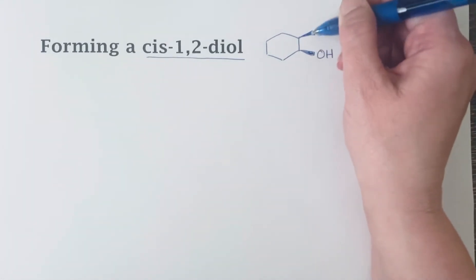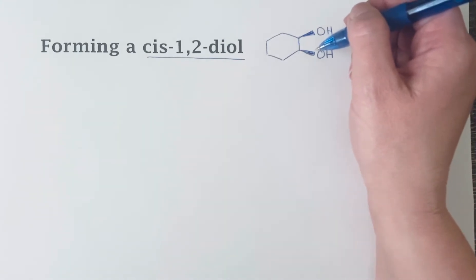If we want to form a cis-diol, the way to do this to control that stereochemistry is to form both of the bonds to oxygen at the same time. If you do that, that's a way to control that they both get added to the same face of the alkene.